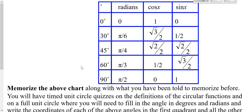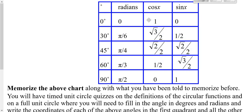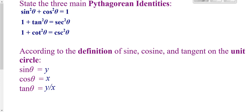You need to have the trig values chart memorized. You should also have memorized the sine and cosine of 0 and 90 degrees, or π/2. You also need to memorize your Pythagorean Theorem identities. And you need to have this definition memorized: when you're on the unit circle, sine is your y, cosine is your x, and tangent is y over x.